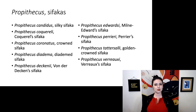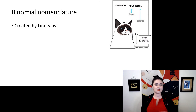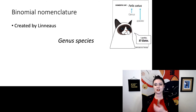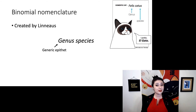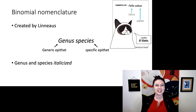Once you know that you have a species name, we format it using binomial nomenclature. This was something created by Linnaeus. "Bi" means two, "nomen" means name — so we're talking about species designated with two names, in this format: genus, then species. The generic epithet, or genus, is always capitalized. The specific epithet, or species name, is not capitalized. And you'll notice that both of them are italicized.